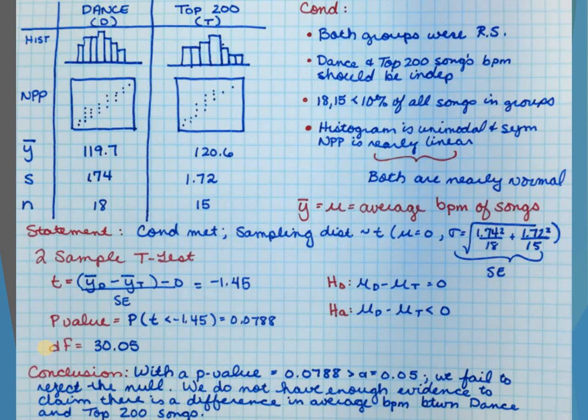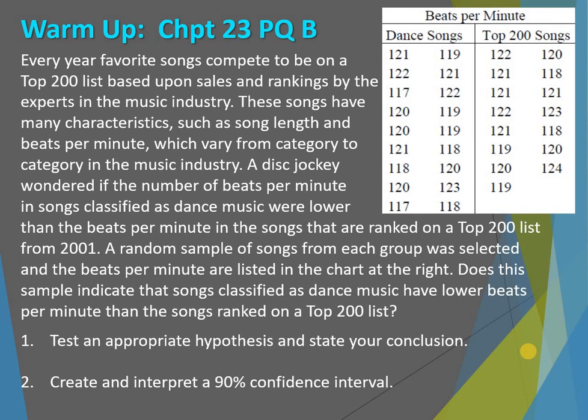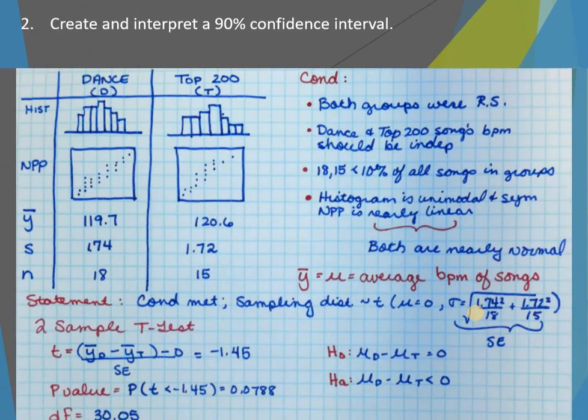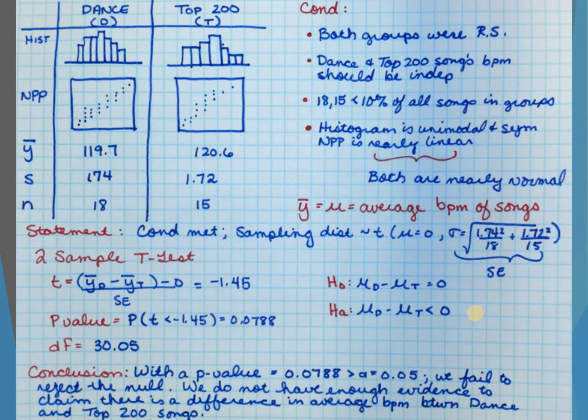When we're looking at our conditions, make sure that you identify what your groups are. If you're using numbers like 1 and 2 or A and B, put it there. You have to talk about the fact that both samples were from random samples. If it states random, state that in your assumptions and conditions — don't go back and say 'I hope it's representative.' We've got random; we're good with that. The beats per minute between the dance and the top 200 should be independent, and right now that idea of independent groups is the most important condition of them all.